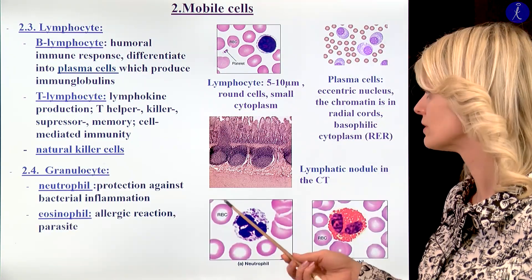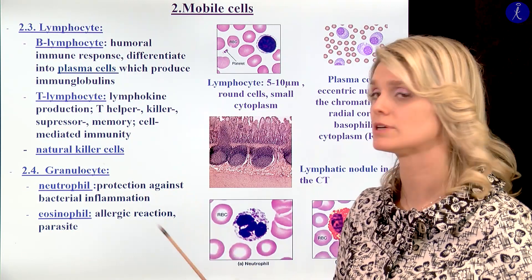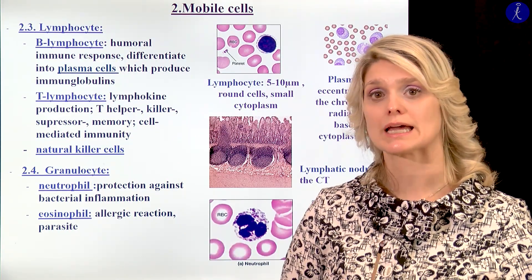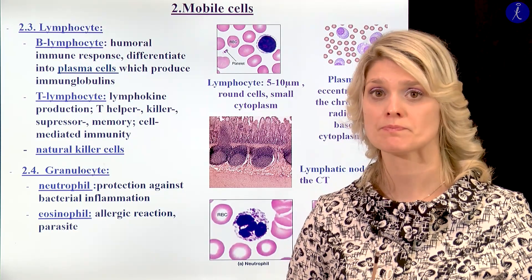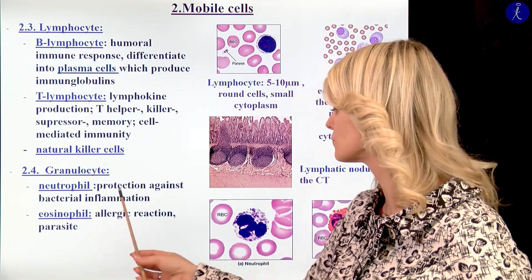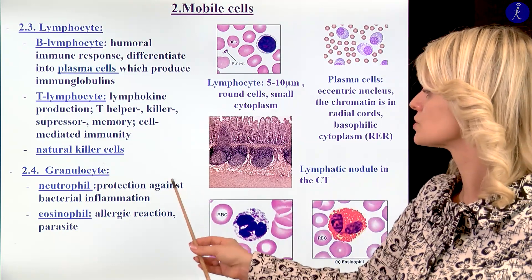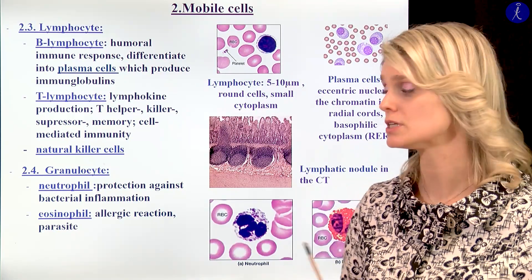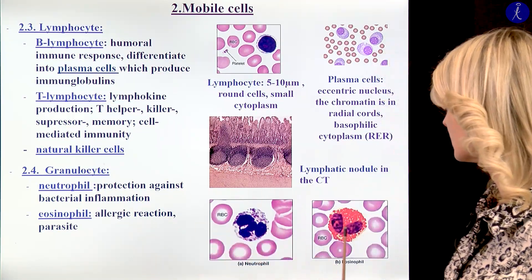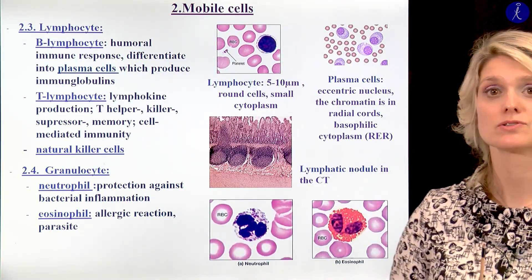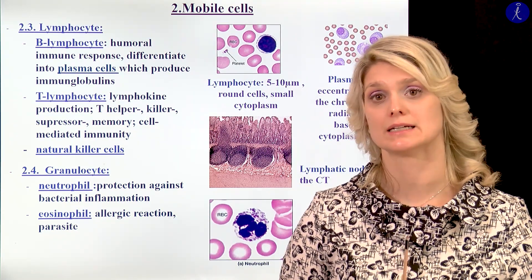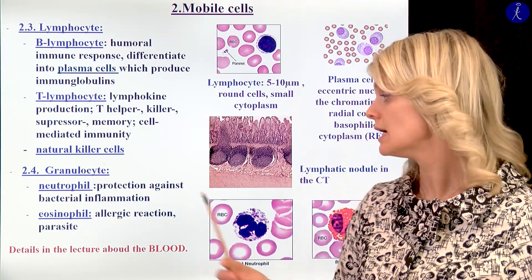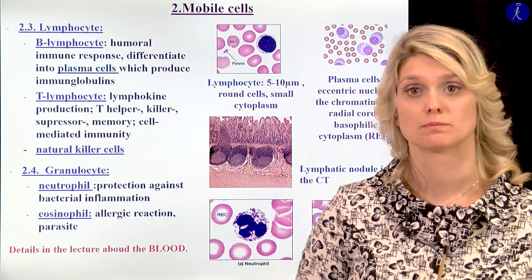We will also demonstrate for you all of the characteristics of the granulocytes. Granulocyte means that we have different granules within the cytoplasm. We can talk about neutrophil granulocytes, which are really important in the protection against bacterial inflammation. And I mentioned earlier the eosinophilic granulocytes, which are involved in the allergic reactions. You will see more details about these cells in the lecture about the blood.